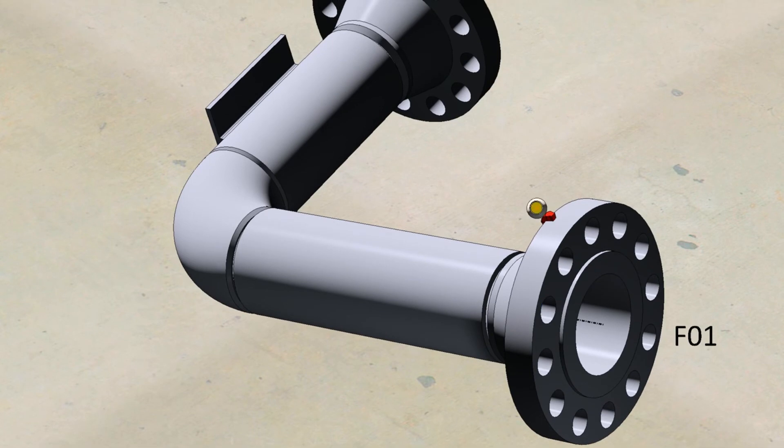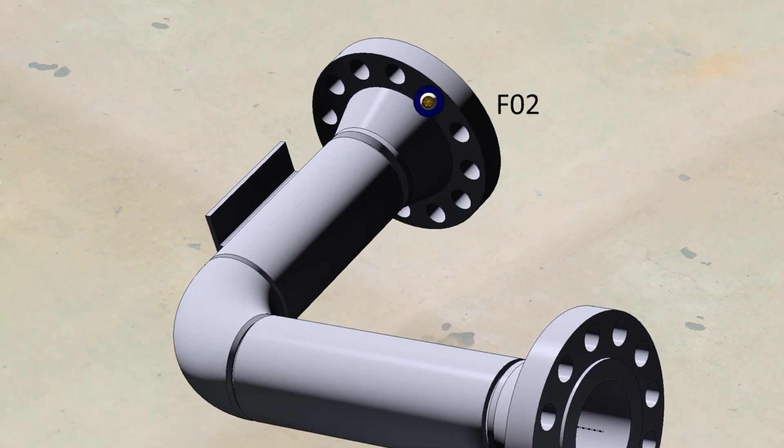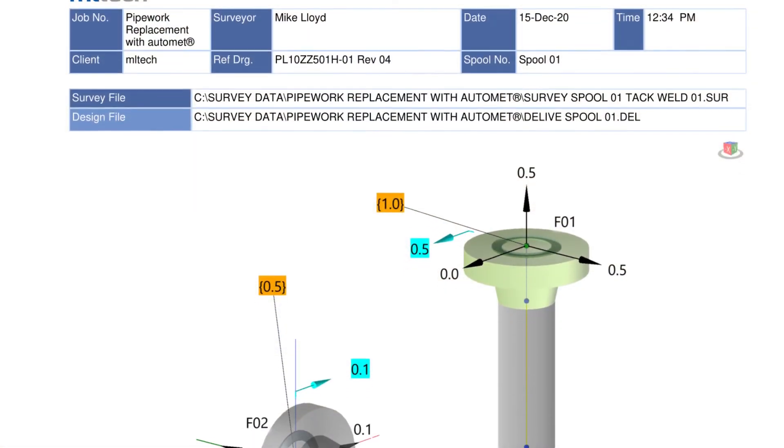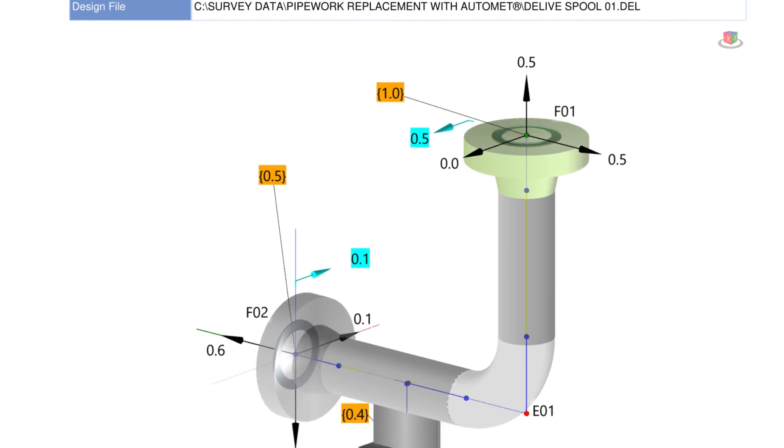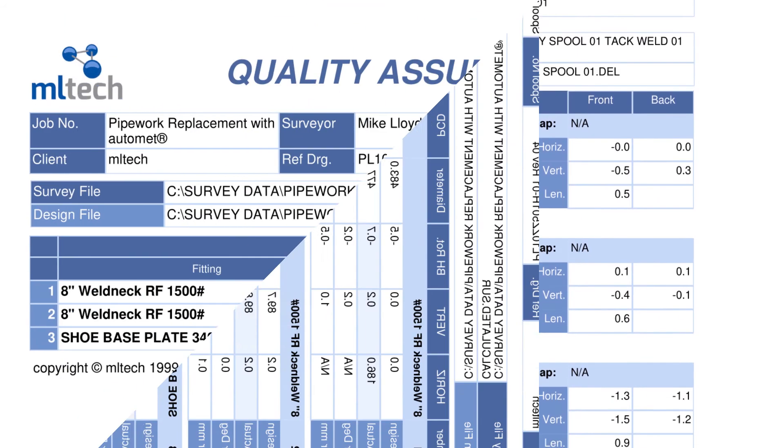During fabrication, the same measurement process can be used after tack welding to ensure the flanges are placed exactly as the site deliverable specified before final welding takes place. Once the spool has been manufactured, a final survey is taken to provide a verifiable report that the spool has been manufactured to within tolerances.